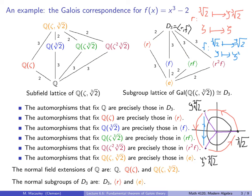Now let's go over the subfields on the left and the corresponding subgroups on the right. Starting with Q at the very bottom — this is a subfield fixed by all six automorphisms in the Galois group, so the set of automorphisms that fix Q is the entire group at the top. Next, Q adjoined zeta: the automorphisms that fix this subfield are precisely those in the corresponding subgroup consisting of R, R², and the identity. Notice that R fixes zeta as does R², so this subgroup fixes this subfield.